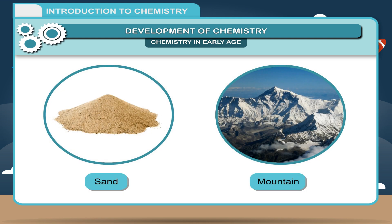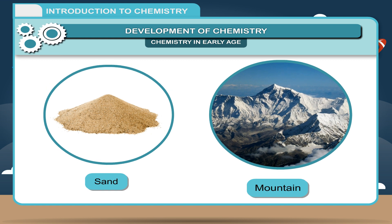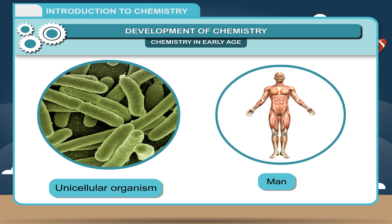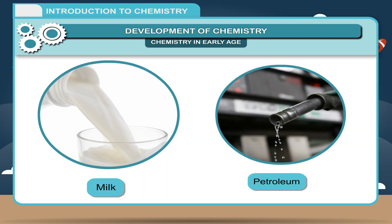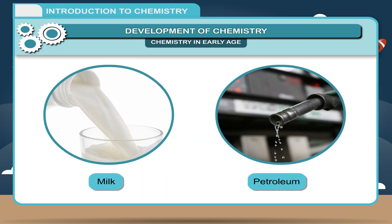Substances could be anything from a grain of sand to mountains, from a unicellular organism to man, or from milk to petroleum. Study of its composition, that is, about particles of which it is made up, comes in the field of chemistry.